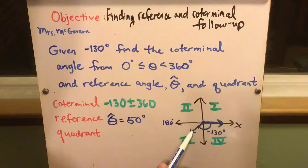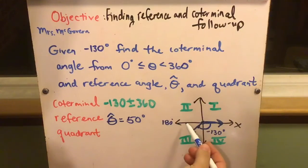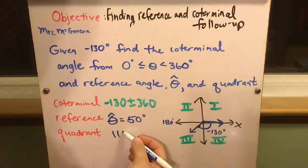The quadrant we already figured out: when x is negative and y is negative, we're in quadrant 3.